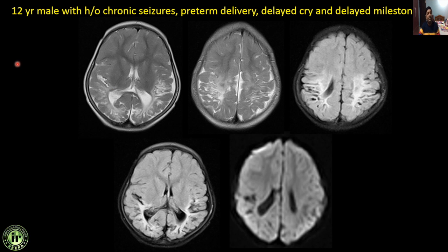Next: a 12-year male with chronic seizures, preterm delivery, and delayed milestones. There are multiple cystic areas of gliosis scattered in bilateral parieto-occipital lobes, mild volume loss, paucity of white matter, and mild asymmetrical dilatation of the atria and posterior horns of bilateral ventricles, not showing restricted diffusion on DWI. This is a classical case of HIE — periventricular leukomalacia or cystic periventricular leukomalacia. In chronic stages, abnormal gyral patterns called ulegyria can develop in HIE.